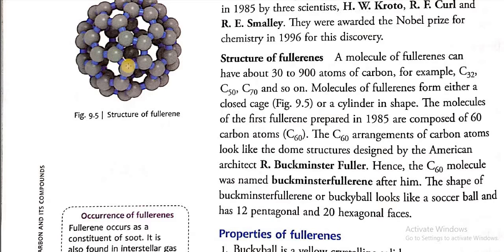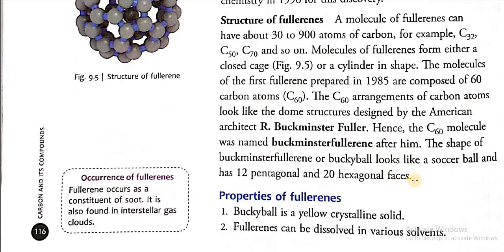The structure is over here, you can see the structure, dome-like structure. Hence the carbon-60 molecule was named buckminsterfullerene after him. The shape of the buckminsterfullerene, or a buckyball, looks like a soccer ball and has 12 pentagonal and 20 hexagonal faces.